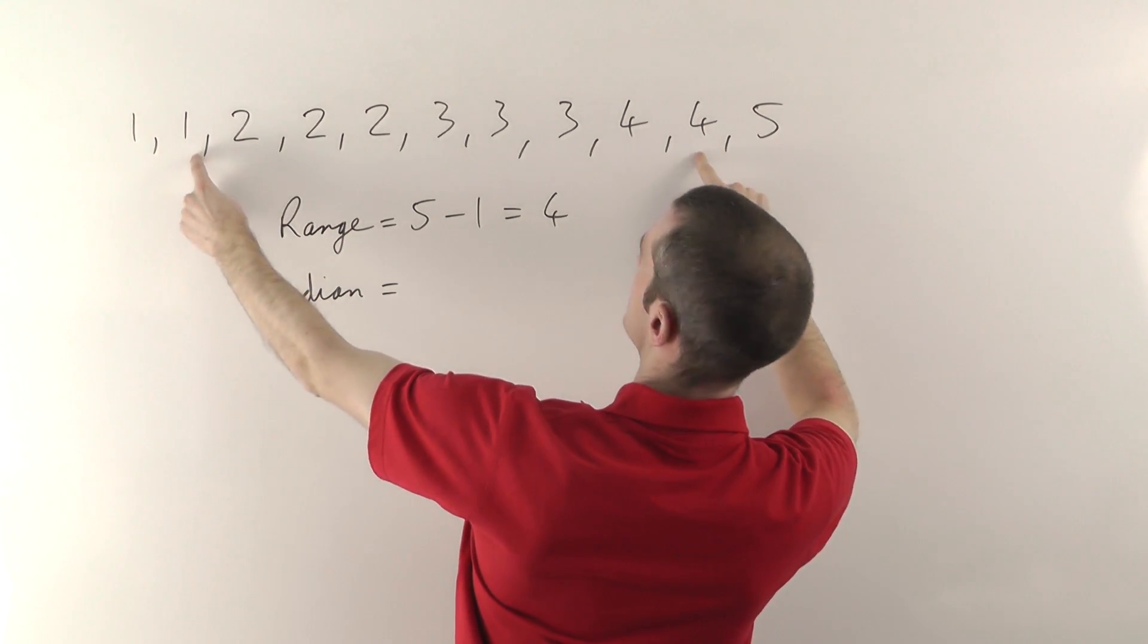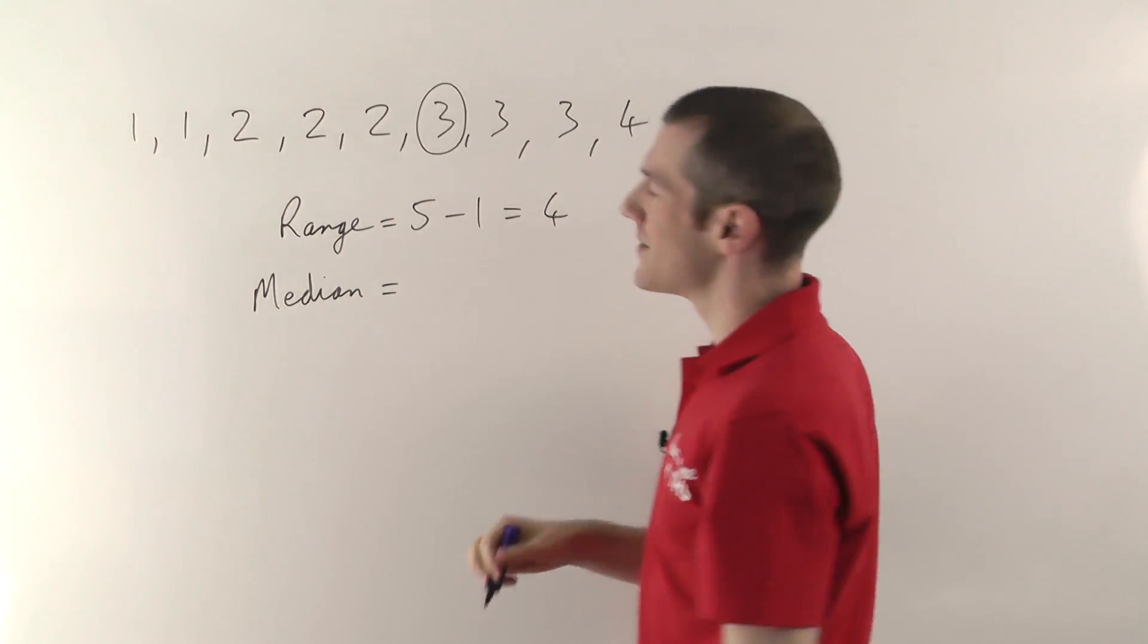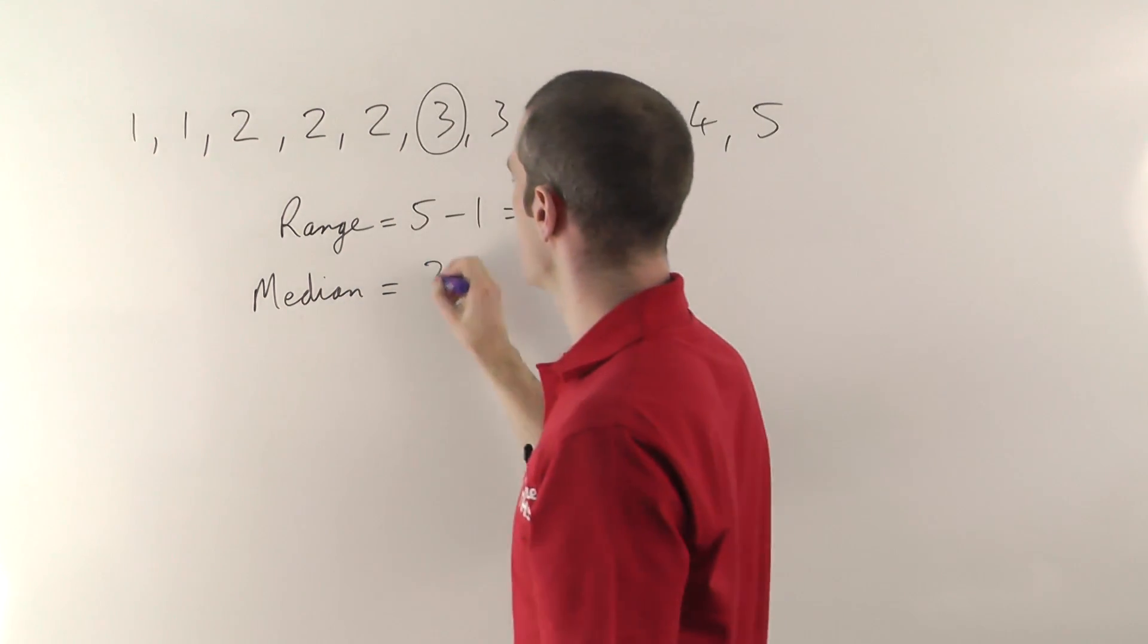You just pair your way in from the outside. So if that goes with that, that goes with that, pair, pair, pair, that's the one in the middle. So that is the median. 3.